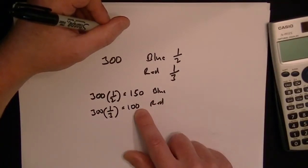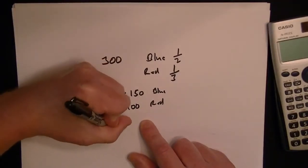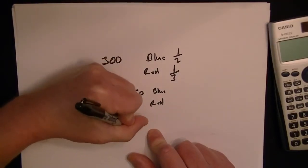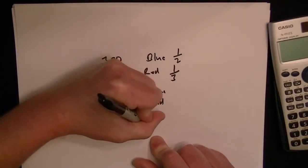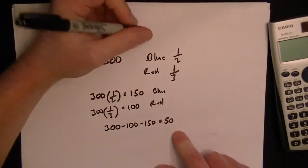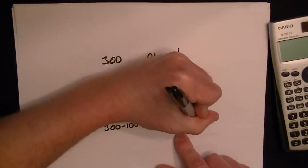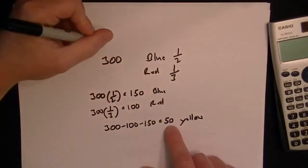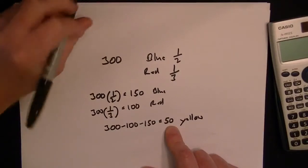and 100 picked red. The remainder have to be the people who picked yellow. So if you take 300 minus 100 minus 150, you get the last group of people who picked yellow.